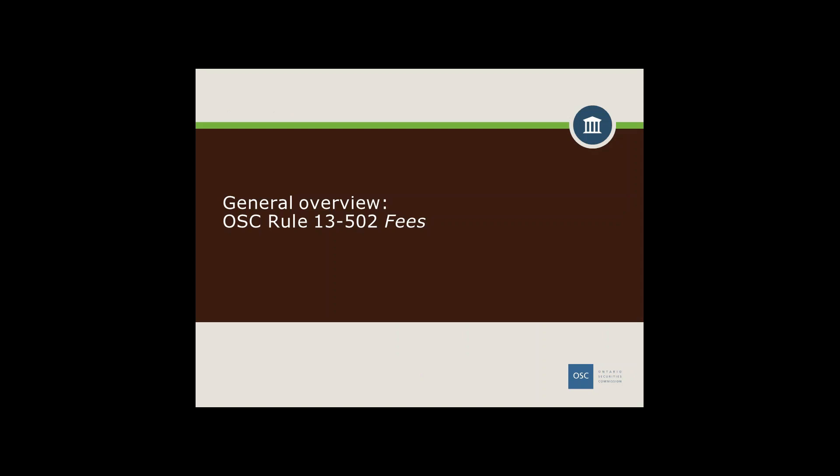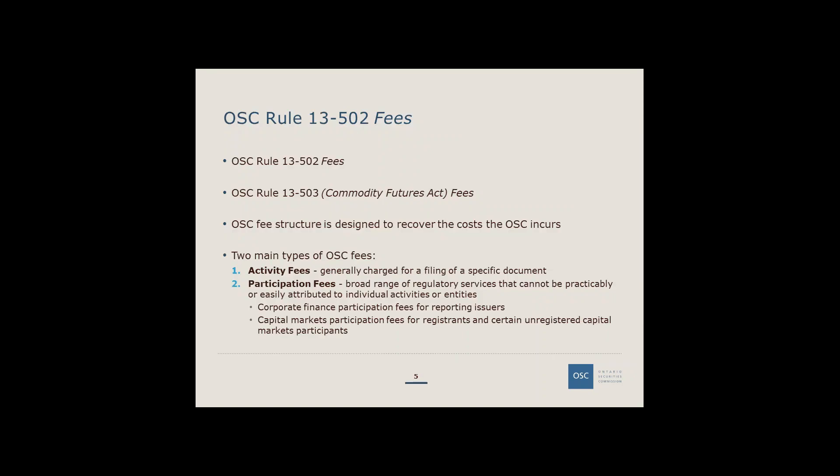The OSC collects fees outlined in OSC Rule 13502 for registered firms and firms relying on an exemption from registration under the Ontario Securities Act, and there's also a fees rule with respect to the Commodities Futures Act. The fees are designed to cover the costs that the OSC incurs. Typically there are two main types of fees. The first one is activity fees — a specific fee charged for a particular filing of a document or form, to cover the cost of the commission reviewing those documents.